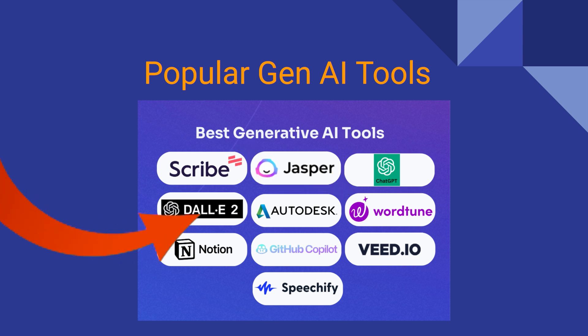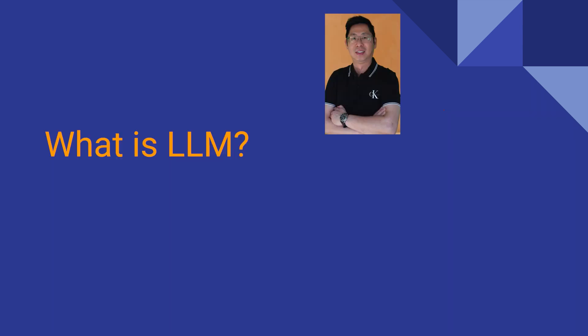Generative AI can be used for image generation, speech, and other modalities. For example, Microsoft Copilot and GitHub are used for coding. These AI applications are powered by large language models, or LLMs.